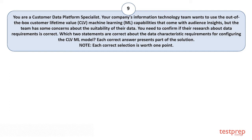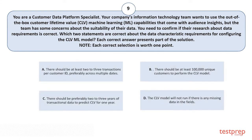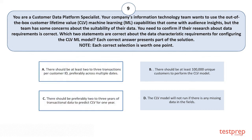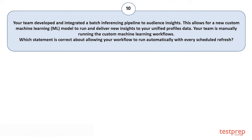Question number nine: Your company's IT team wants to use the out-of-the-box Customer Lifetime Value machine learning capabilities in Audience Insights, but has concerns about data suitability. Which two statements are correct about data characteristic requirements for configuring the CLV ML model? Option A: There should be at least two to three transactions per customer ID, preferably across multiple dates. Option B: There should be at least 100,000 unique customers to perform the CLV model. Option C: There should be preferably two to three years of transactional data to predict CLV for one year. Option D: The CLV model will not run if there is any missing data in the fields. The correct answers are Option A and C.